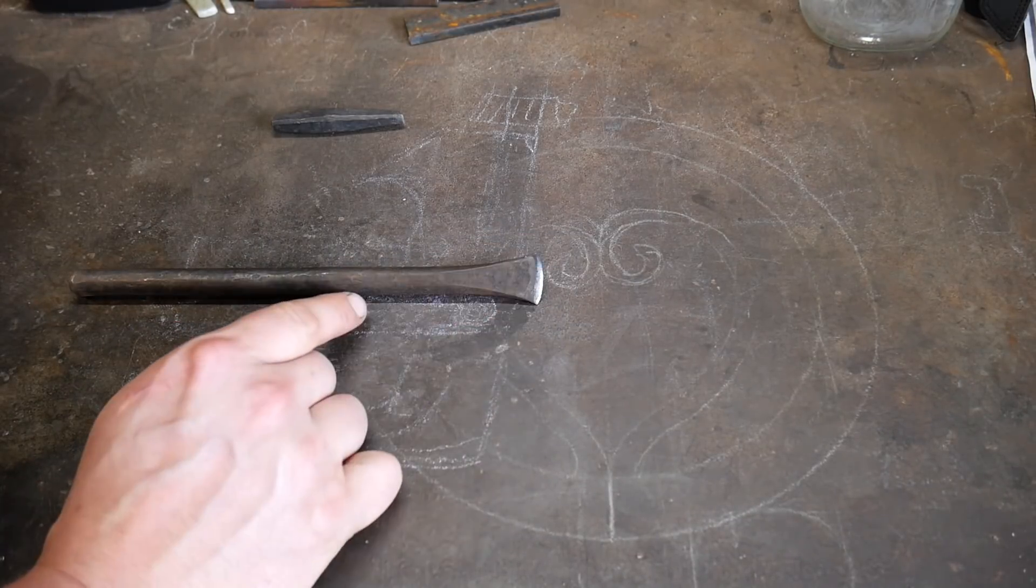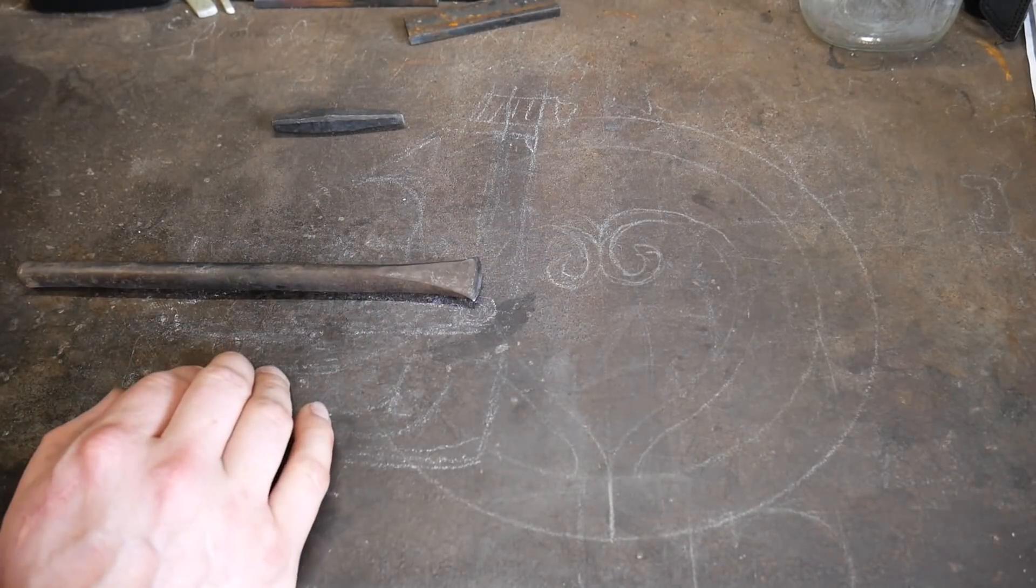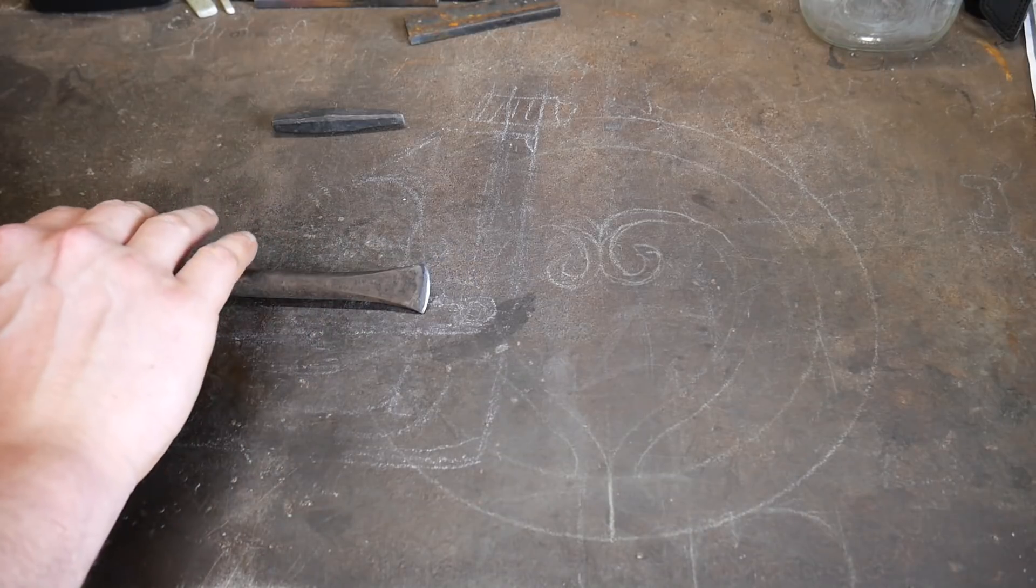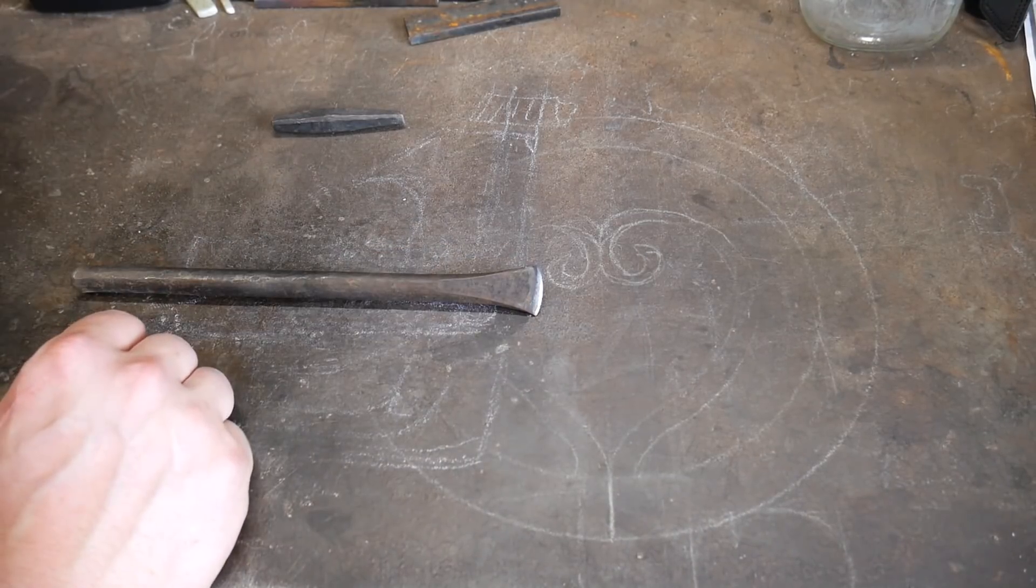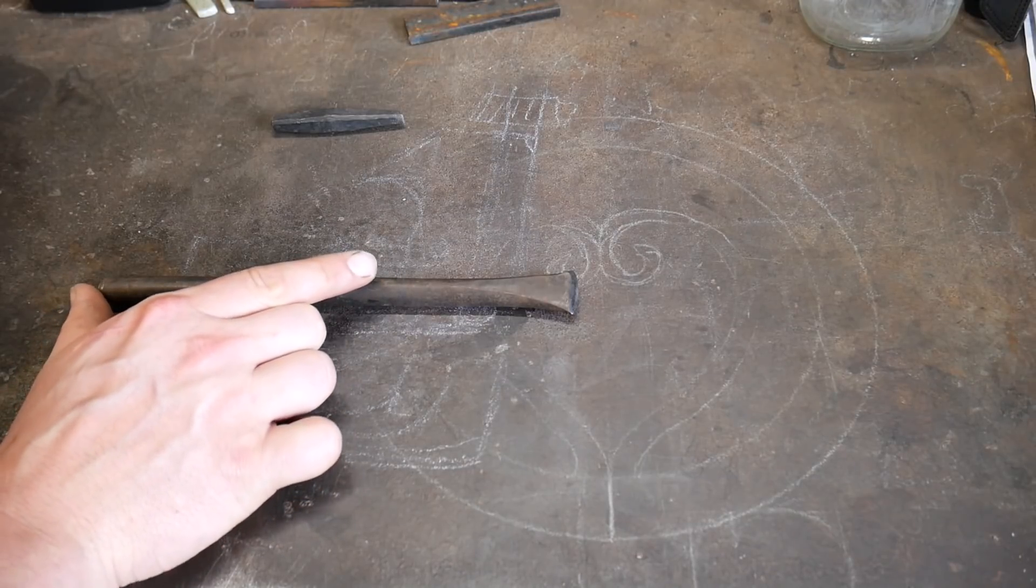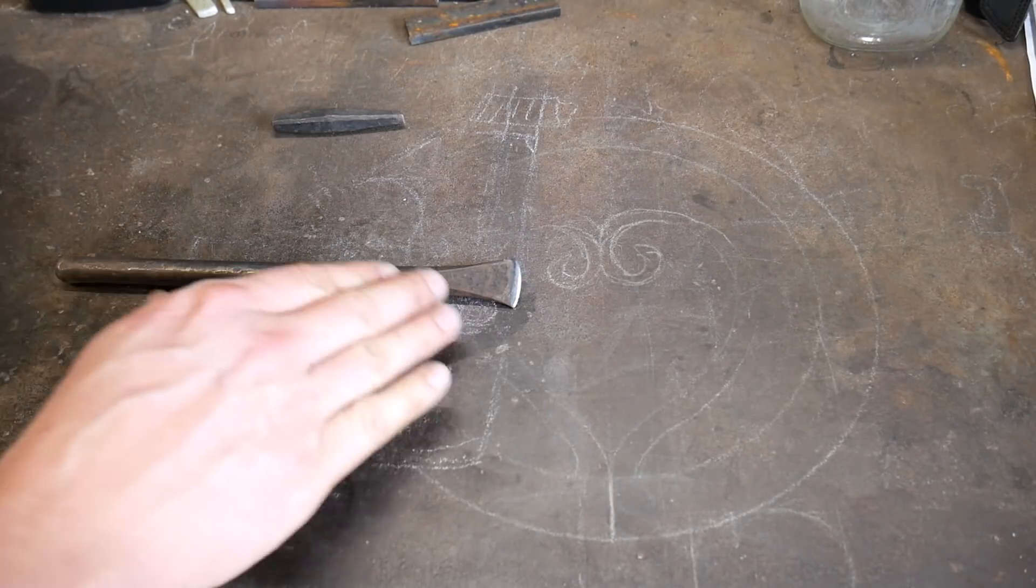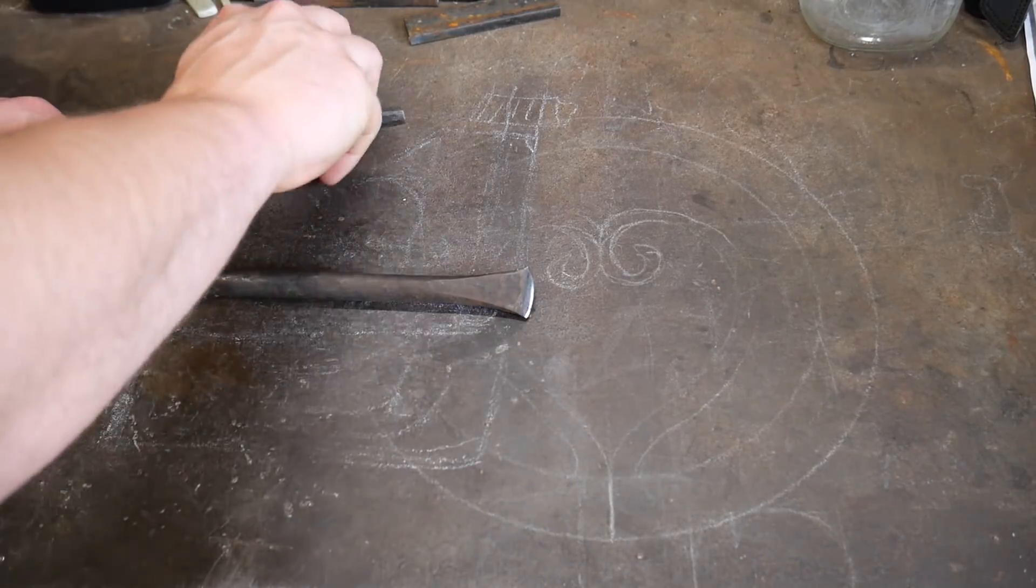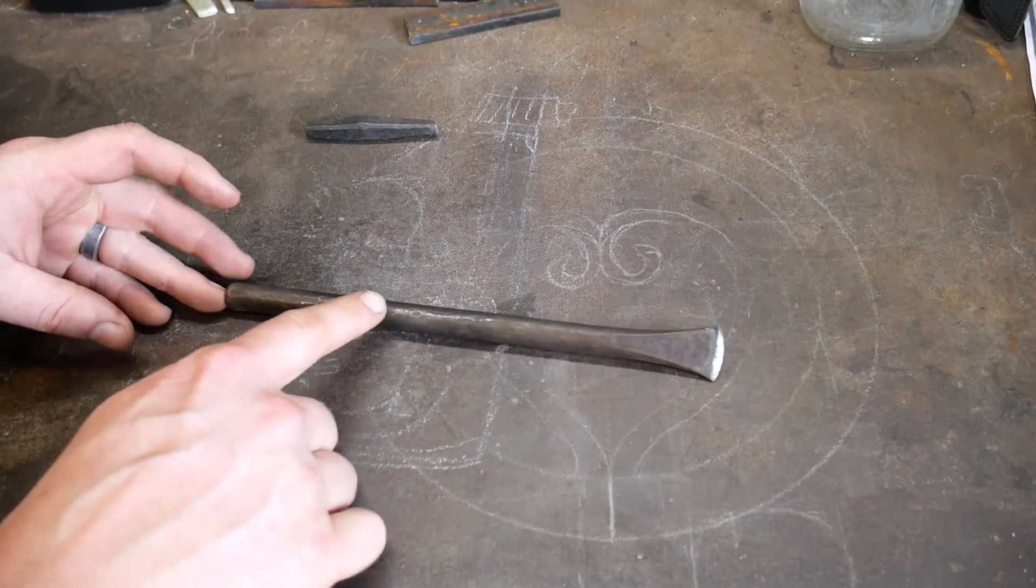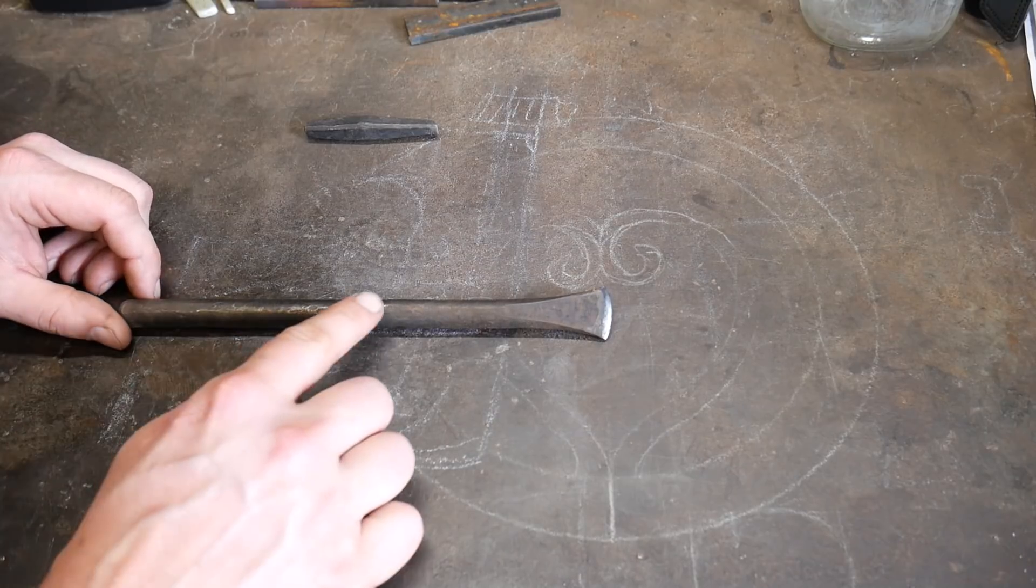This chisel was brought up to a critical temperature—I say critical loosely—it was brought up to a non-magnetic state and then quenched in water. Not the whole tool, let me be clear. This was left as forged back here, and this part here was brought up to a non-magnetic state and then quenched in water. You say, okay Roy, that's a lot like what you're talking about or anybody's methods. Yeah, but here's how it was tempered. This end was put in the fire and heated until it got to a nice cherry red temperature.